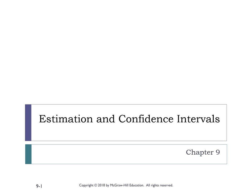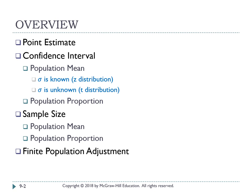Let's start our new lesson on estimations and confidence intervals. In the previous chapter, chapter 8, it was assumed that the mean, standard deviations, and shapes of our population are known. But in reality, this information is not available. So how can we estimate our population using our sample? This chapter will help you estimate your population. In this chapter, we will learn about point estimates, confidence interval, sample size, and finite population adjustments.